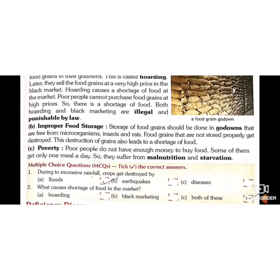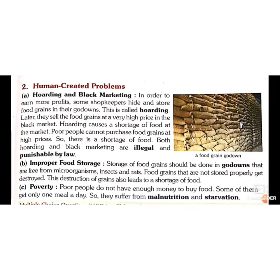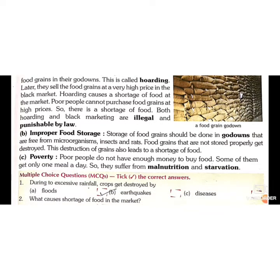Next are human-created problems. First is hoarding and black marketing. Hoarding means hiding and storing food grains to get extra profit. Some shopkeepers and wholesalers hide and store food grains in their godowns. Later, when there is a shortage of food grains, they are sold at high prices, which is called black marketing.